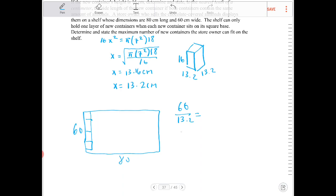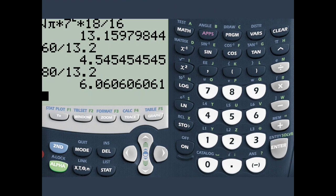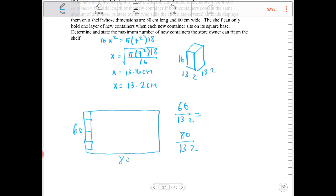And then 80, how many of those? 80 divided by 13.2. So 80 divided by 13.2, that would be 6. The most I can fit is 6. So going in this direction, the most I can fit is 6.